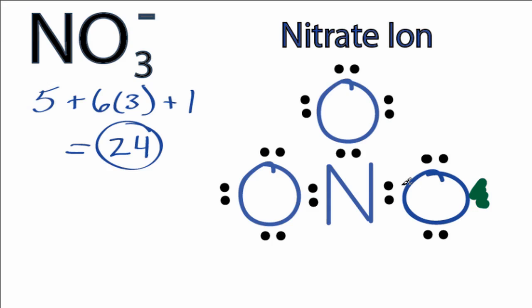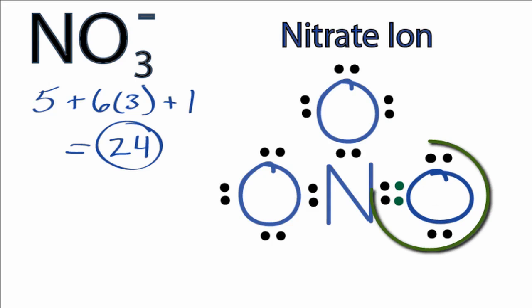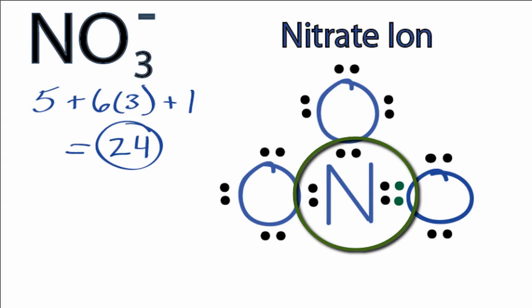Now the oxygen still has eight, but the nitrogen also has eight. So we've used all 24 valence electrons for the nitrate ion Lewis structure. Each of the atoms has eight valence electrons, so their outer shells are full.